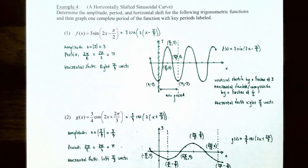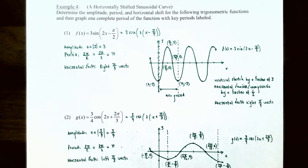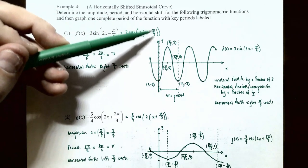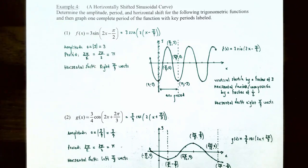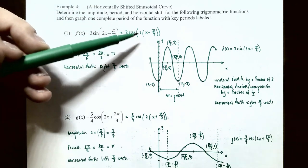Example 4: Horizontally Shifted Sinusoidal Curves. For f(x) = 3·sin(2x - π/2), factor out 2 from the argument: 2x - π/2 = 2(x - π/4). So k = 2 and b = π/4. The amplitude is |3| = 3. The period is 2π/2 = π. Since b = π/4 is positive, the horizontal shift is π/4 units to the right.